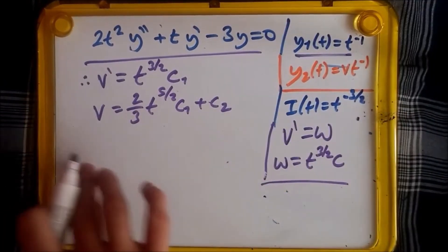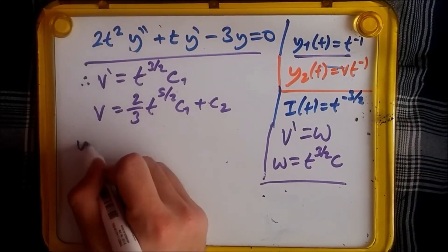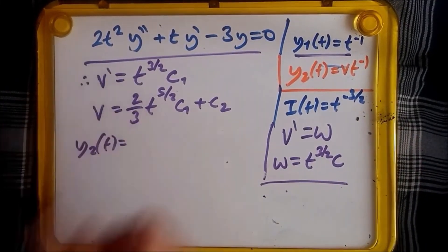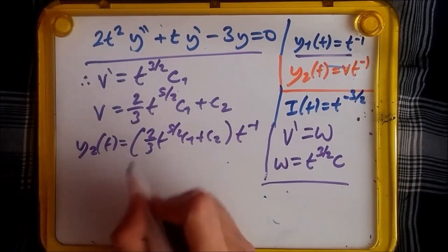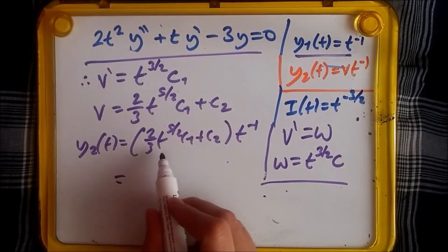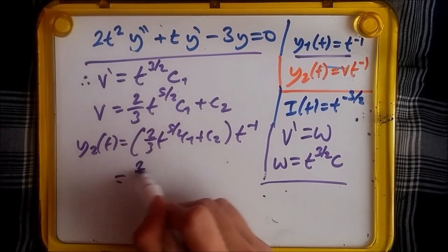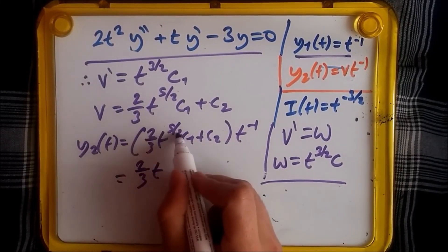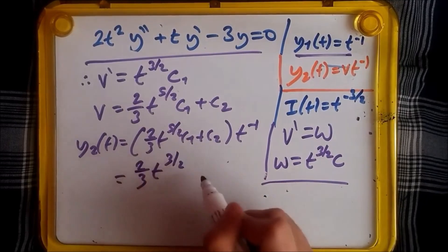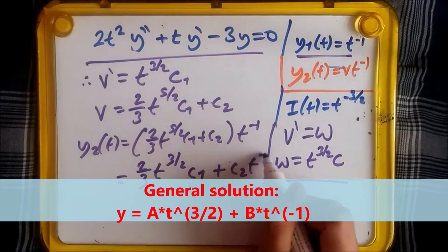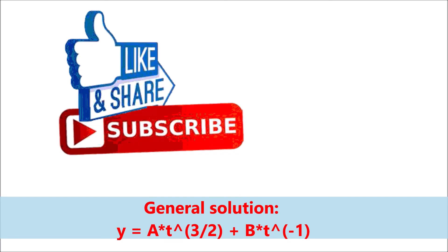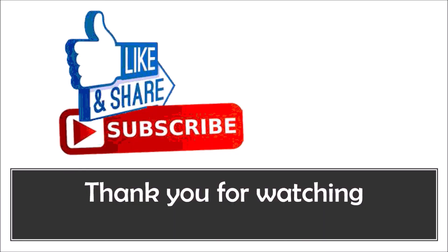Now plugging this back into y2, we should have y2(t) equals - and that's it guys. Simplifying this out, we should have, let's do so, this should cancel out. This should drop the power down, so this should be two thirds t - 5 over 2 minus 1 should give us 3 over 2 - times c1 plus c2 t to power negative 1.